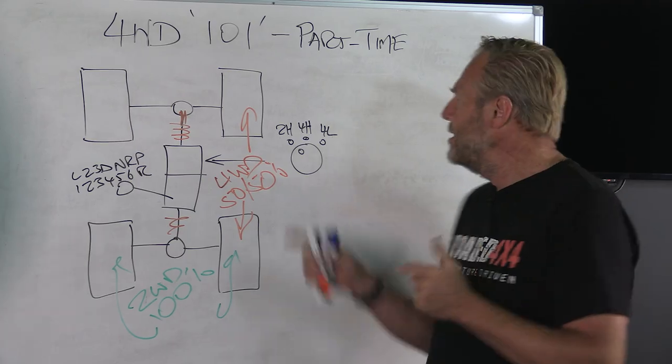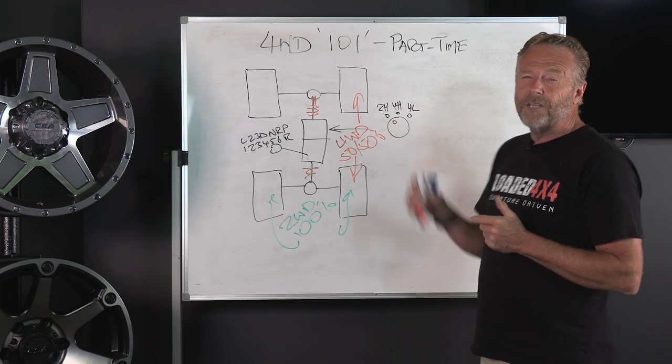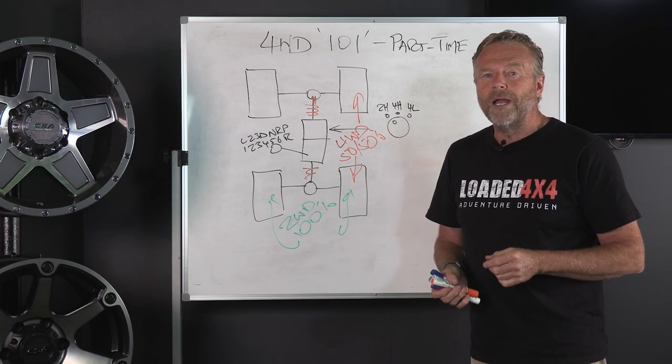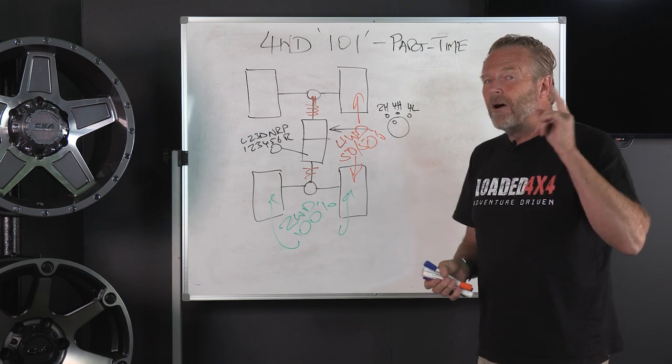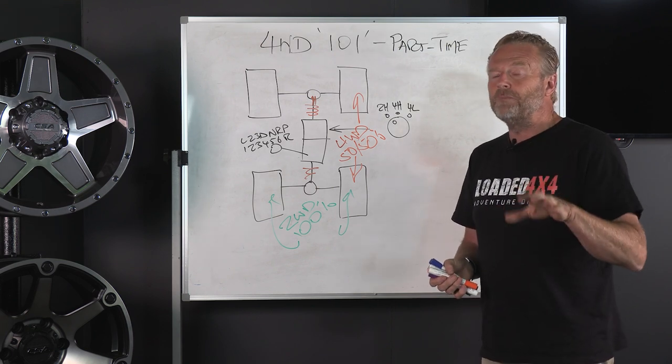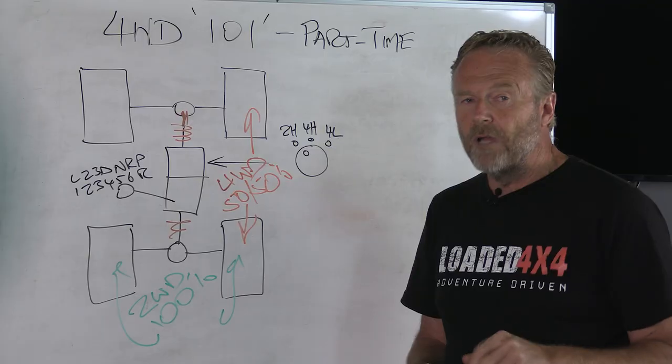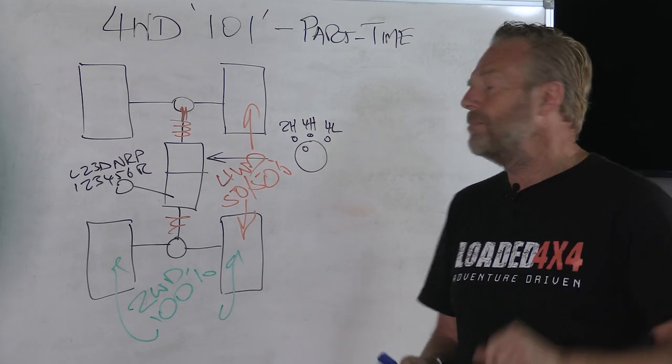A part-time 4WD will sustain a high range 4WD engagement at speeds up to 100 kilometers an hour, but I don't recommend you do that. Try and keep your speeds down to a more modest 80 kilometers an hour if the road space will support it, and that'll help keep you safe.